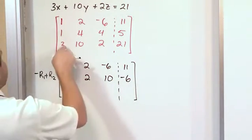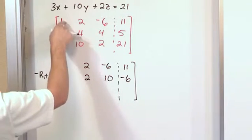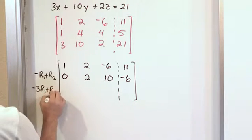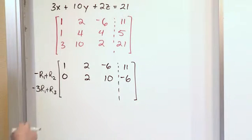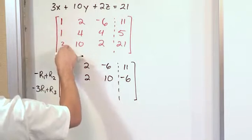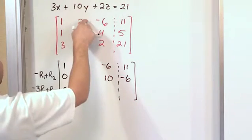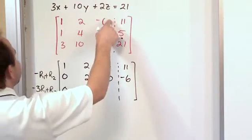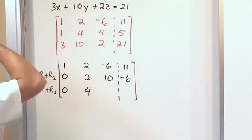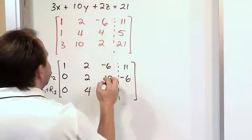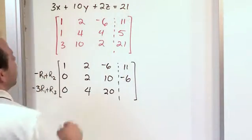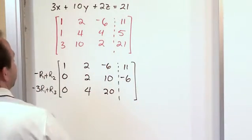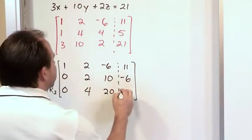And at the same time I can make this a 0 by multiplying this row by negative 3. So negative 3 times row 1 plus row 3. So when I multiply this by negative 3 and add it I get a 0. Negative 3 times this would give me negative 6 plus 10 is positive 4. Negative 3 times this is going to be positive 18 plus 2 is 20. And then negative 3 times this is going to give me negative 33 plus 21, which will give me negative 12.